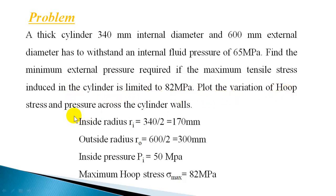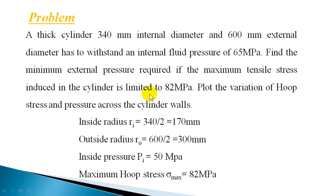Find the minimum external pressure required if the maximum tensile stress induced in the cylinder is limited to 82 MPa. Plot the variation of hoop stress and pressure across the cylinder walls. Internal and external diameters are given. The maximum tensile stress means it has to be the inside hoop stress. We know that inner walls are subjected to maximum stress, which is the maximum hoop stress.